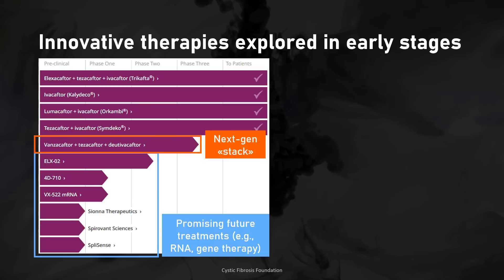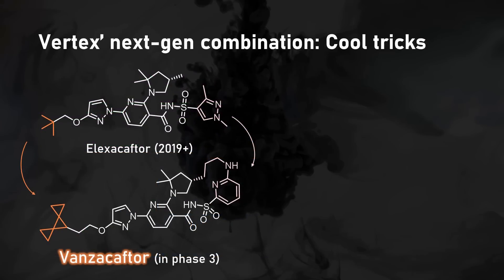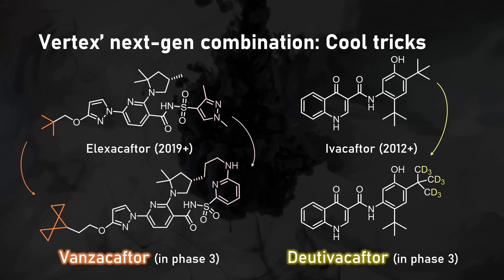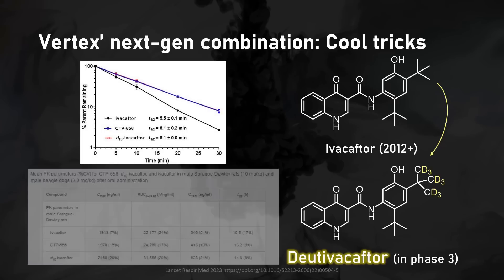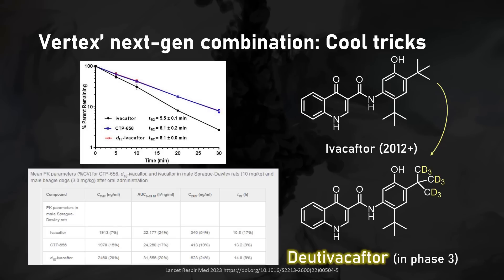Vertex has a final late-stage program for another combo: Vansacaftor and Dutivacaftor. Vansacaftor is an optimized version of the corrector Elexacaftor, with the tert-butyl group replaced by a funky dispiro group. Dutivacaftor is a deuterated analog of Ivacaftor, the CFTR potentiator. Deuteration of one of the tert-butyl groups leads to significantly higher in vitro and in vivo stability. Since Ivacaftor needs to be taken twice a day, the Dutivacaftor combo is probably efficacious with just a single daily dose.